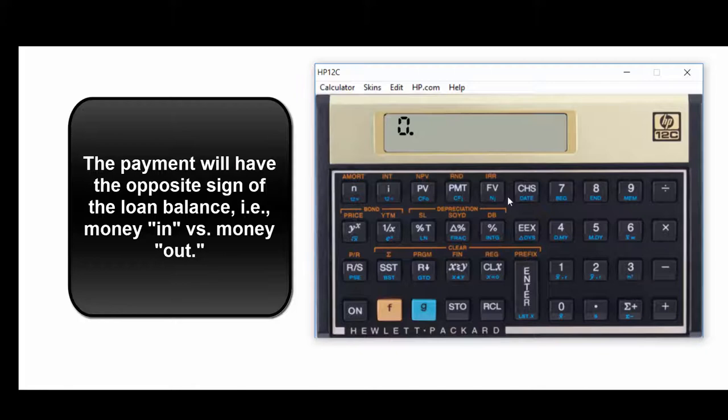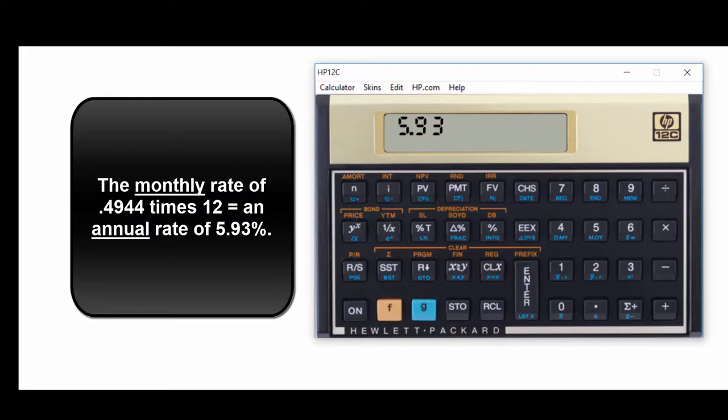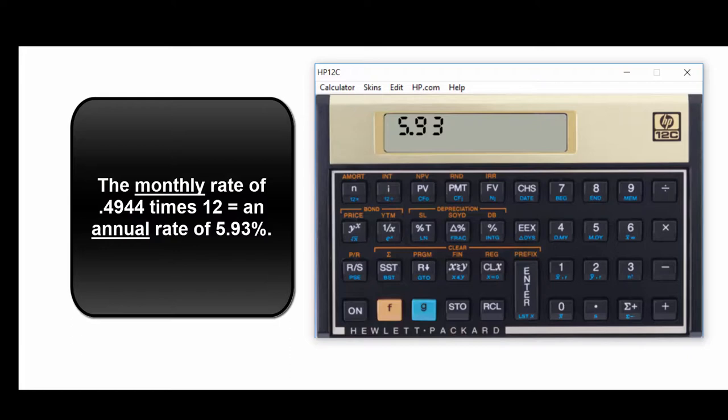Let's hit zero FV to tell the calculator there's no balloon payment, and then let's simply solve for I. That's the monthly rate, so let's hit enter to make sure it's stored in there, and then hit 12 times. And that tells us that that payment equates to a 5.93% annual rate.